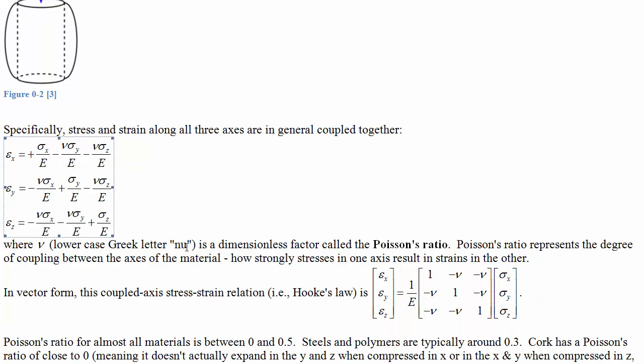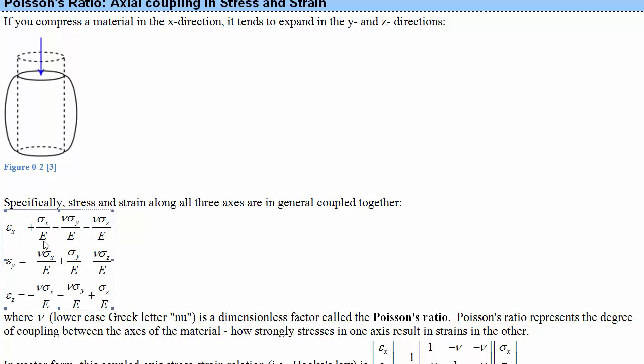Looking at this equation, the x strain is not just dependent on the x stress over Young's modulus like it was earlier. If there's a y stress, we may find a different x strain. If we have a tensile stress in y, extending the beam in y, we expect it to go in in the x direction even without any x stress — that's why there's a negative sign. Epsilon x increases as x stress increases, but decreases as y or z stress increases.